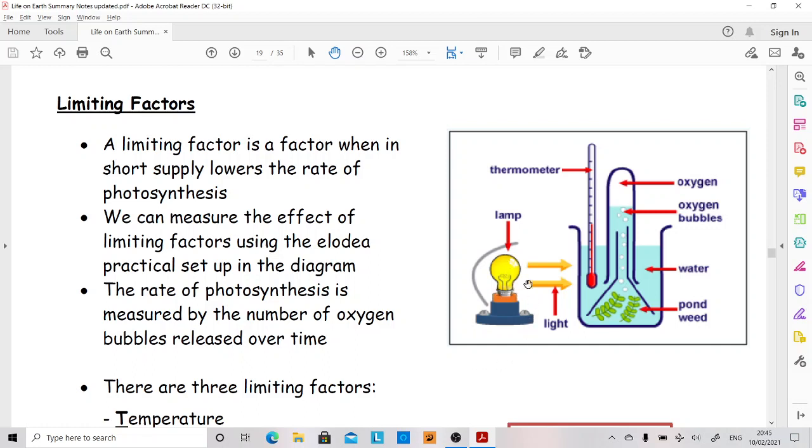Sometimes the heat from the lamp could affect it if you bring your lamp nearer. So sometimes the whole thing, not the lamp, but the rest of it is put in a big trough of water just to prevent that. Or sometimes there's a heat shield put between the lamp and the Elodea bubbler.